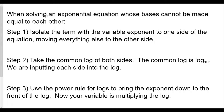When solving an exponential equation whose bases cannot be made equal to each other: step one — isolate the term with the variable exponent to one side of the equation, moving everything else to the other side. You want to get that number to the x power all by itself, which may mean dividing out anything that's multiplying it.